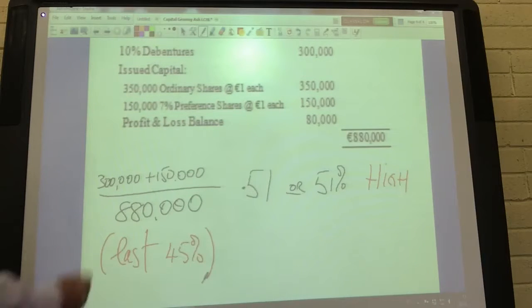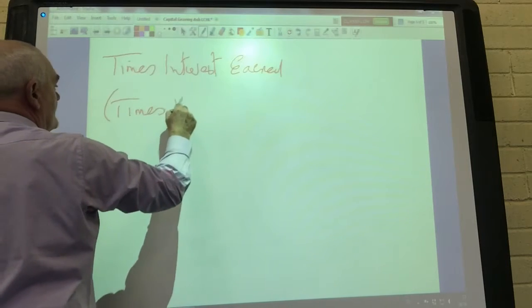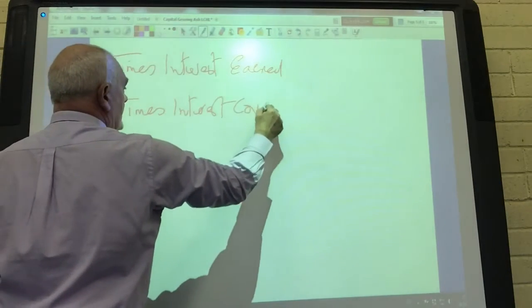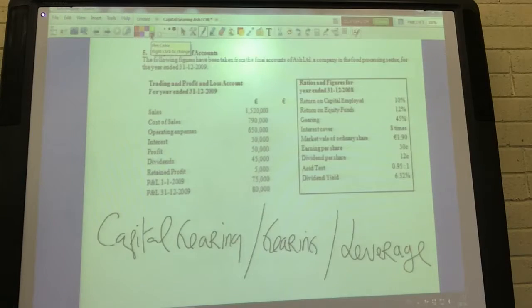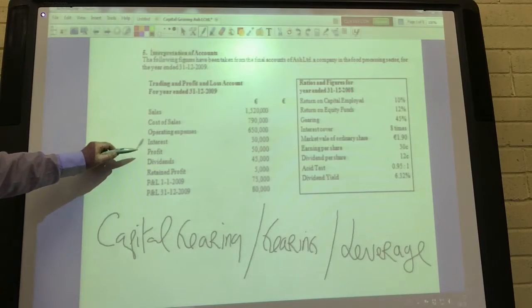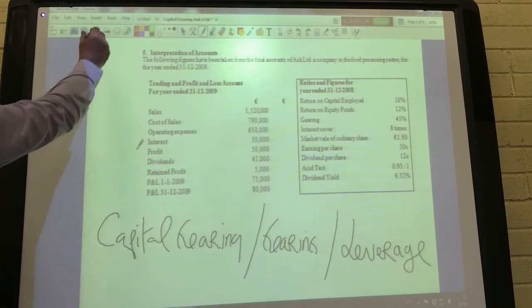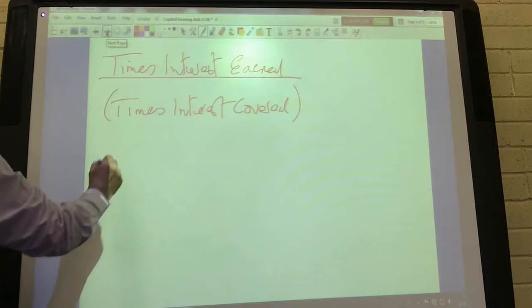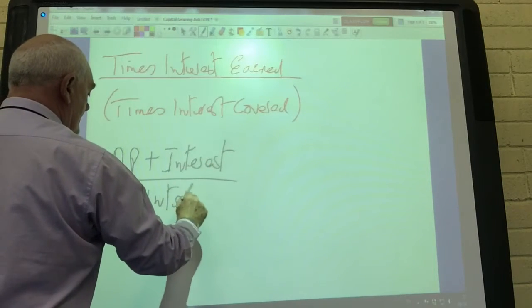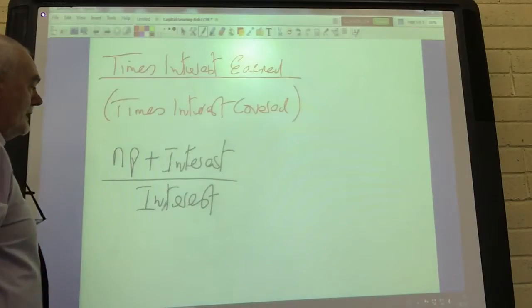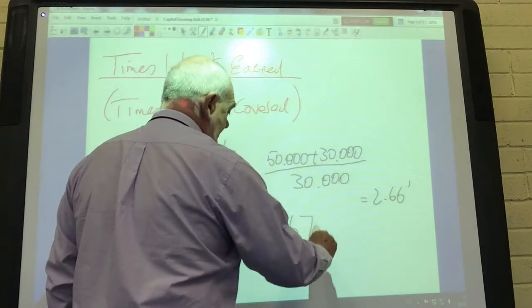The other pressure comes from what's referred to as times interest earned or times interest covered. This measures the ability of the company's profits to cover the fixed return. The firm's net profit is 50,000. The net profit before interest was 80,000. So the times interest earned is net profit plus interest over interest, and that gives us 2.66 recurring or 2.67 times.